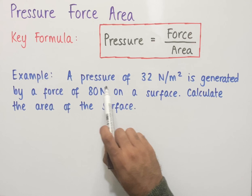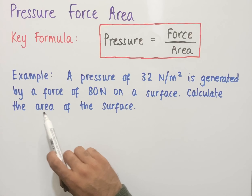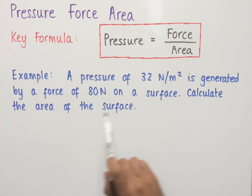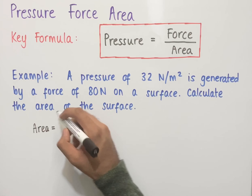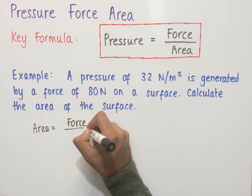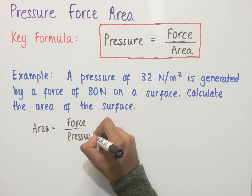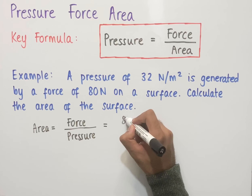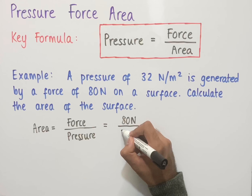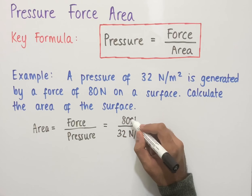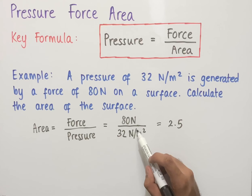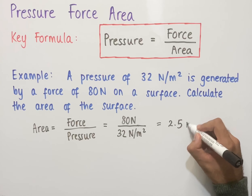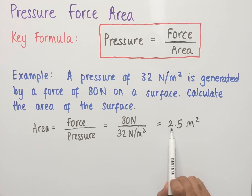The second example says: a pressure of 32 newtons per meter squared is generated by a force of 80 newtons on a surface. Calculate the area of the surface. We need to use the rearrangement: area equals force divided by pressure. The force is 80 newtons and the pressure is 32 newtons per meter squared. 80 divided by 32 equals 2.5. The newtons cancel, leaving meters squared. So the area of the surface is equal to 2.5 meters squared.